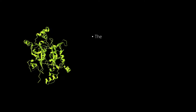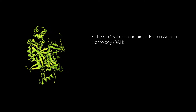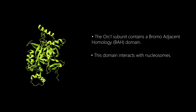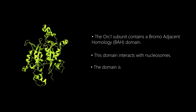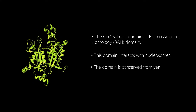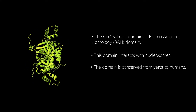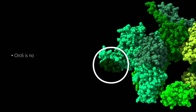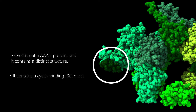Importantly, the ORC1 subunit contains a bromo-adjacent homology, or BAH domain. This domain is conserved in the ORC structure from yeast to humans. ORC6 is not a AAA+ protein and has a distinct structure; it contains a cyclin binding RXL motif.